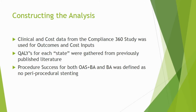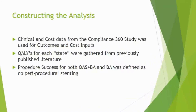In constructing our analysis, we used data from the Compliance 360 study of the Diamondback system. Outcomes data and cost data through 12 months were used. Hospitals provided cost data in the form of Uniform Billing Reports or UB04s. Quality adjusted life years, or QALYs, for each state of the patient populations were gathered from previously published literature. It should be noted that procedure success for both OAS plus BA and BA was defined as no periprocedural stenting.